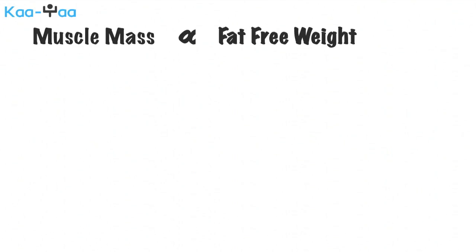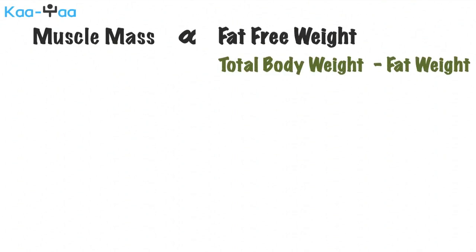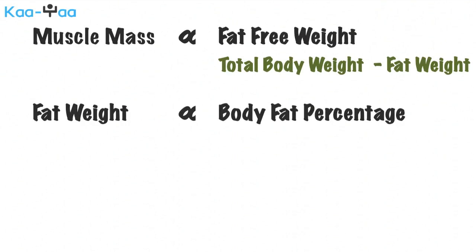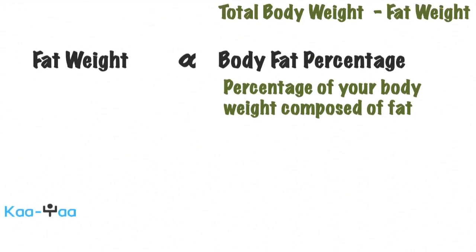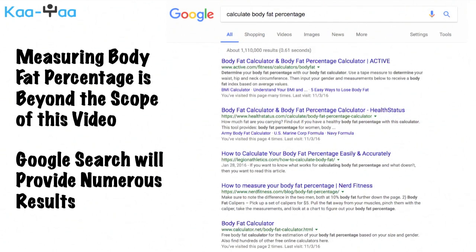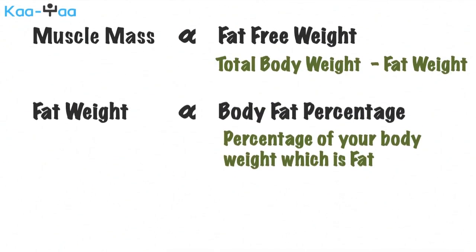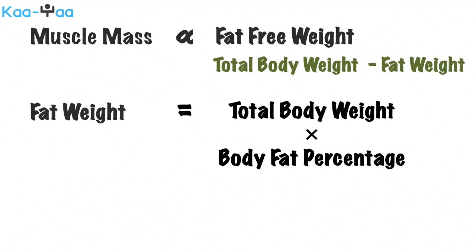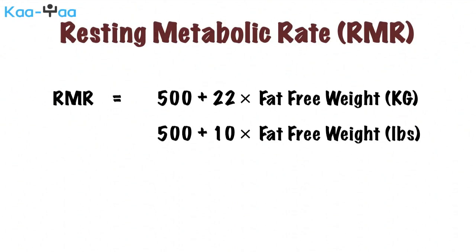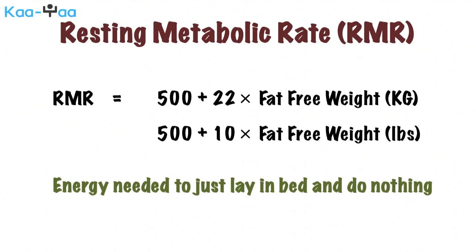Your muscle mass is proportional to your fat-free weight, which is your total weight minus your fat weight. Your fat weight can be calculated by figuring out your body fat percentage — the percentage of your body weight which is composed of fat. Measuring body fat percentage is beyond the scope of this video; a Google search will find numerous articles you can look up. Once you have figured out your body fat percentage, you can calculate your fat weight by multiplying your total weight by the body fat percentage. Once you know your fat-free weight, you can use a formula to calculate your resting metabolic rate, or RMR, which is the energy you need just lying in bed and doing nothing.